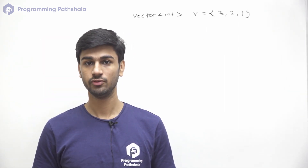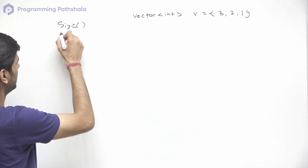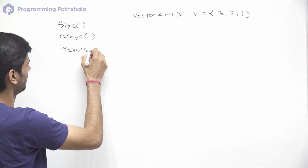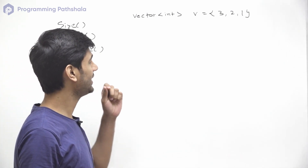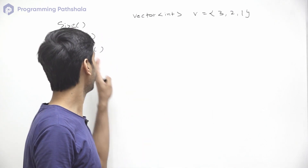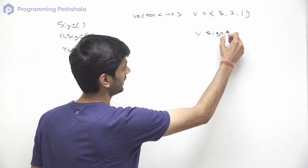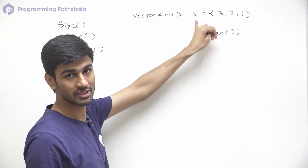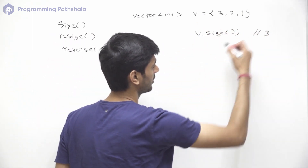Now let's talk about a few functions which are commonly used with vectors: size, resize, and reverse. If we want to know how many elements our vector currently contains, we can use the size function like v.size(). It will return an integer value representing the number of elements currently present in the vector. So if we currently have 3 elements, v.size() will return 3.